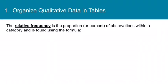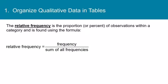Now let's talk about relative frequency. The relative frequency is the proportion or percent of observations within a category, and it's found using the formula relative frequency equals frequency divided by the sum of all frequencies. Now this says proportion or percent. Proportion is the decimal value, and percent has been multiplied by 100 and has a percent symbol on it. We almost always use the proportion.